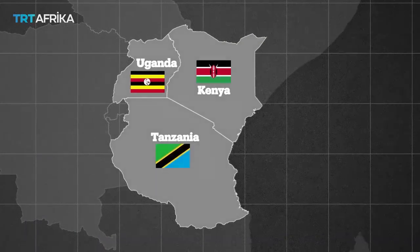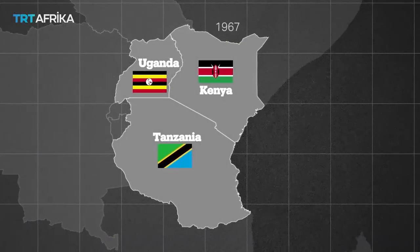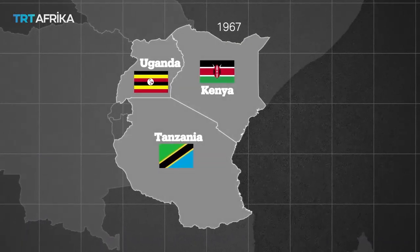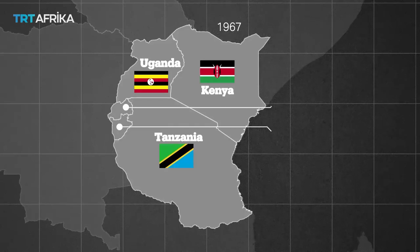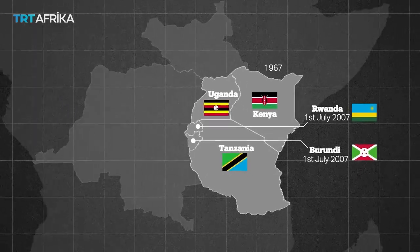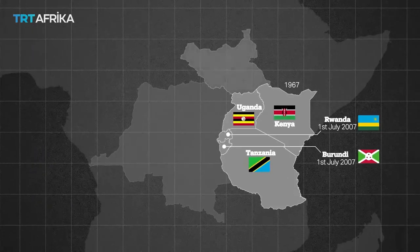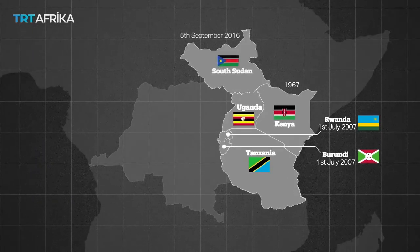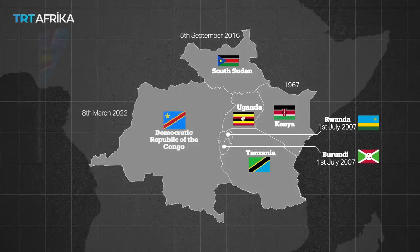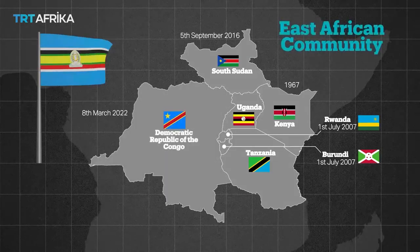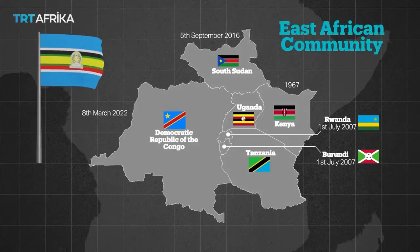The East African community has a long history. It has been beneficial in a number of ways to the East African community members. The East African community collapsed, but then it was re-established in 1999. Since then, member states have done a lot.